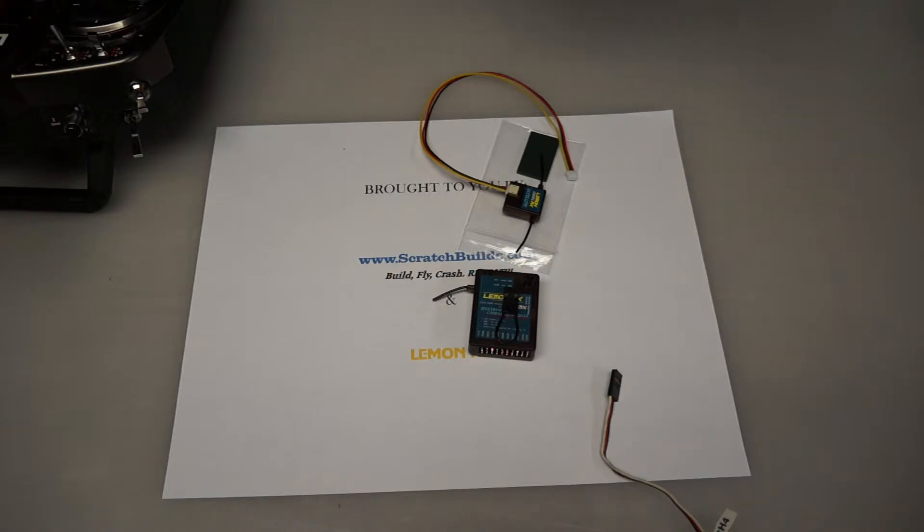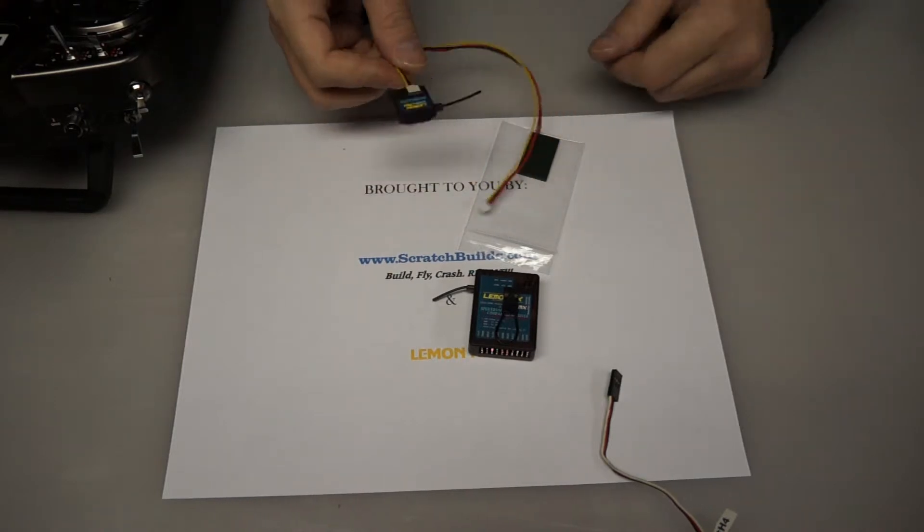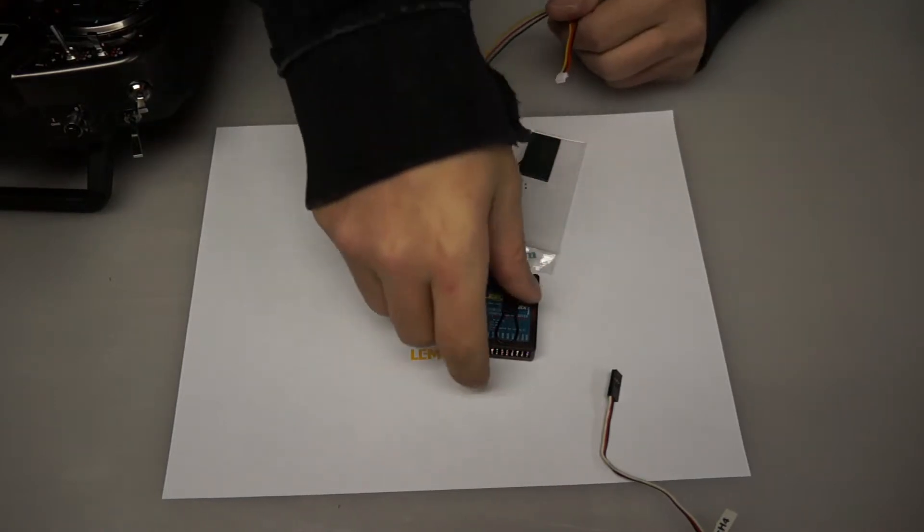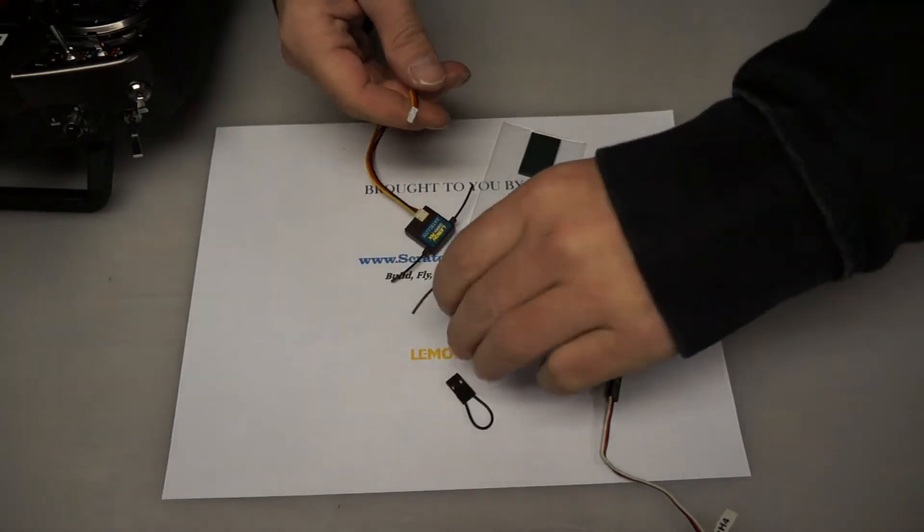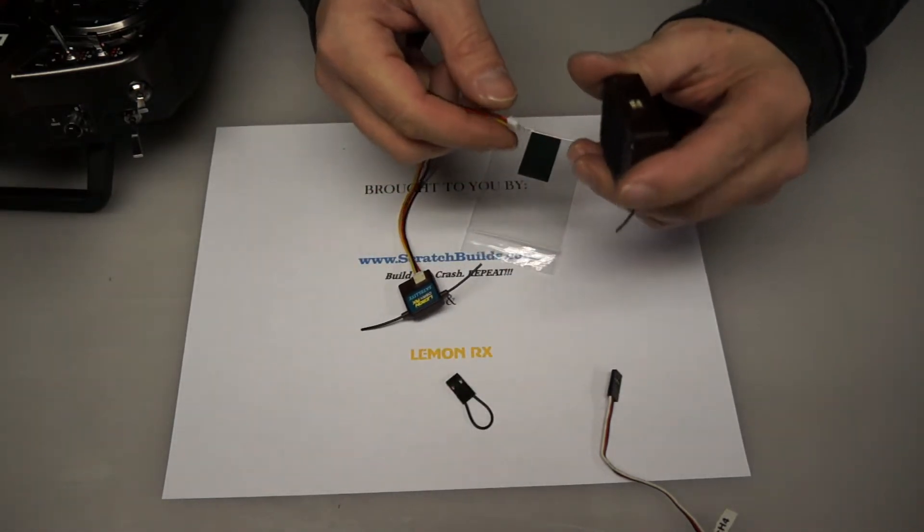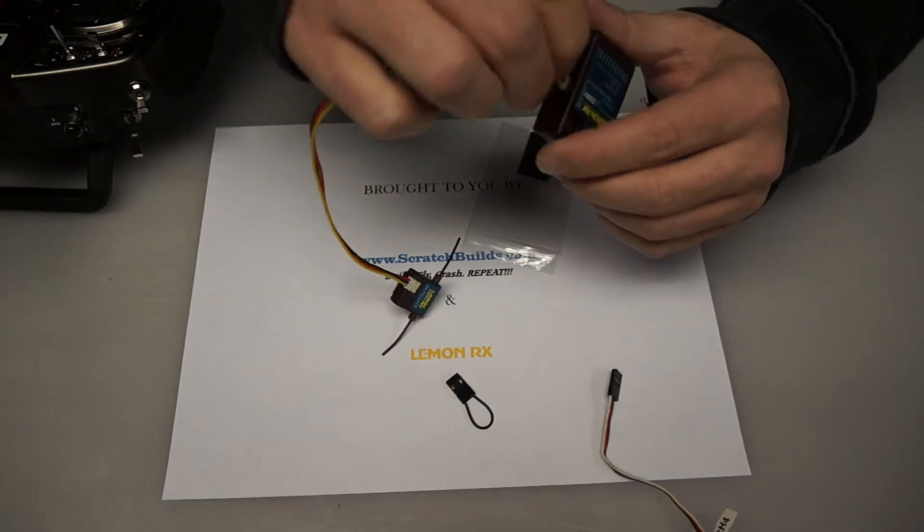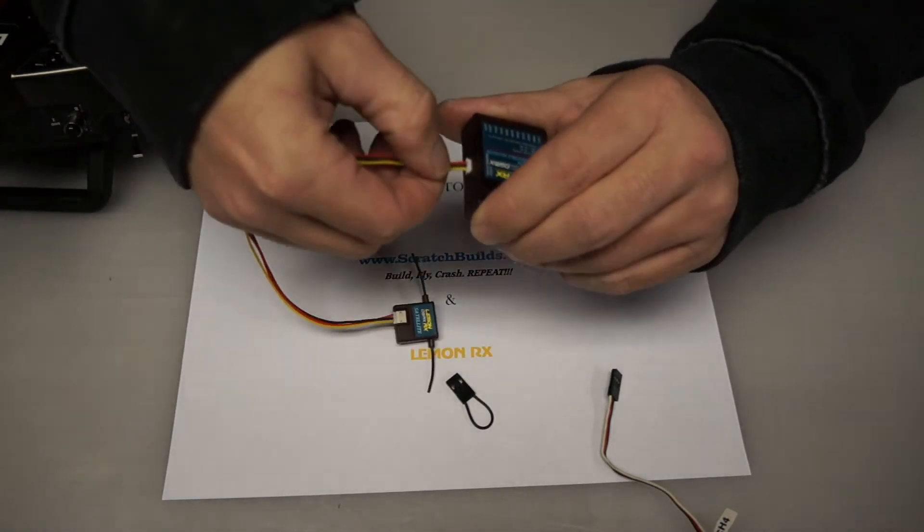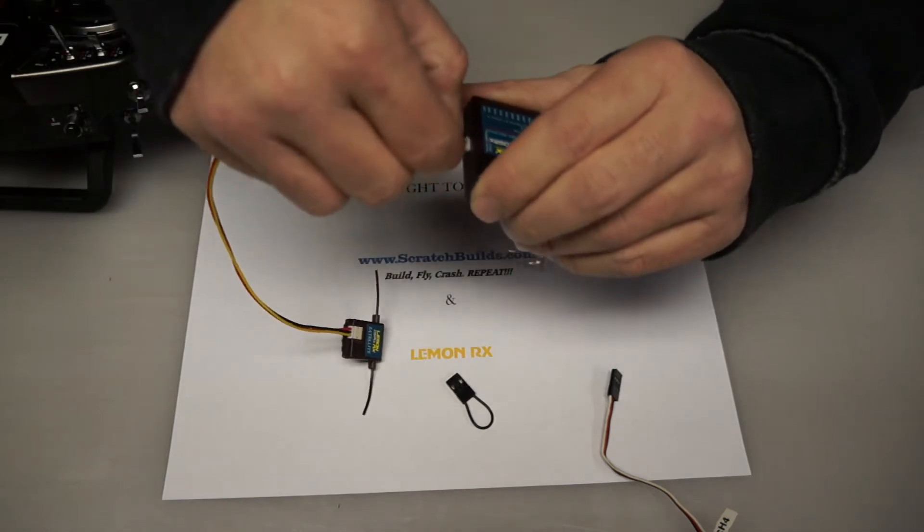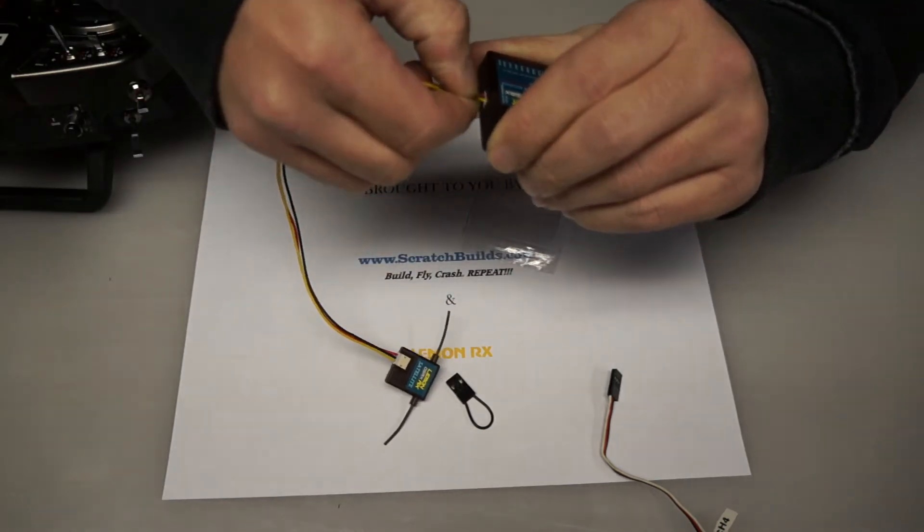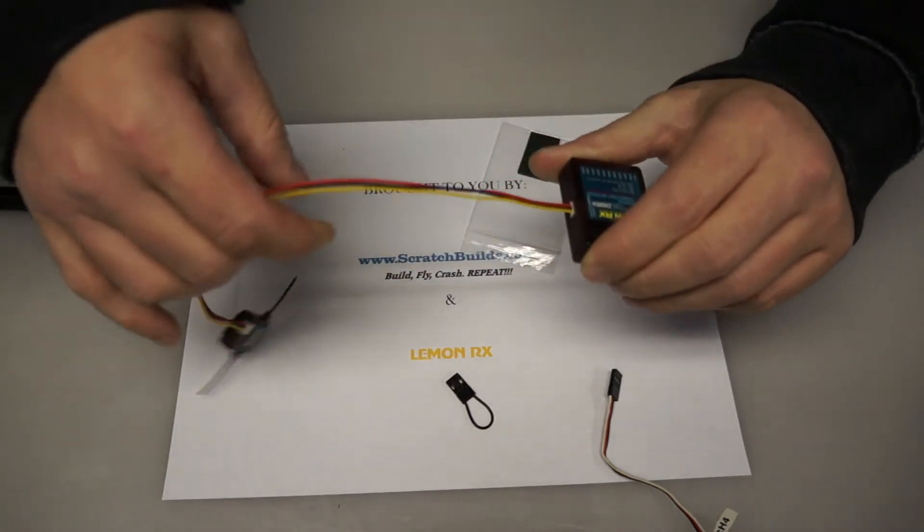So let's get going. The first thing that we're going to do is connect the satellite to the receiver. The Lemon receiver has a satellite port on the side there. So we're just going to plug that in. And it's a very positive connection. It won't come out very easily.